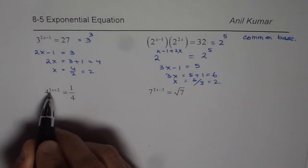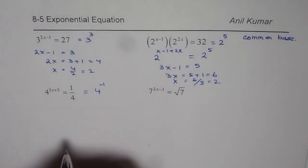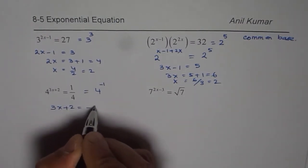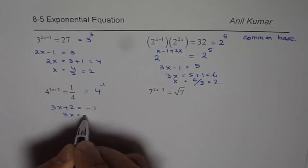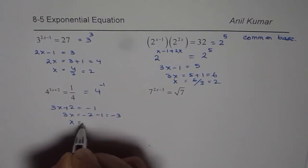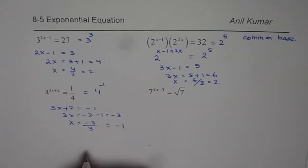4 to the power of 3x plus 2 equals to 1 over 4. 1 over 4 really means 4 to the power of minus 1. So now we can write this as 3x plus 2 equals to minus 1. 3x equals to minus 2 minus 1, which is minus 3. x is equal to minus 3 divided by 3, that is minus 1. So x equals to minus 1 is the solution.